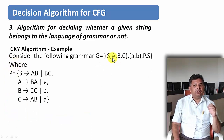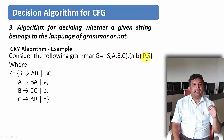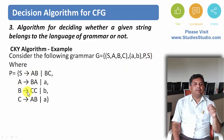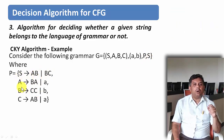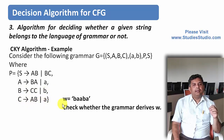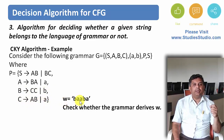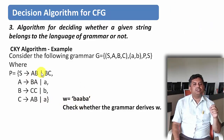Now let us take an example. We have a grammar with variables S, A, B, and C; terminal symbols a and b; production rules P; and starting symbol S. The productions are: S → AB | BC, A → AB | a, B → CC | b, and C → AB | a. We take the string W = b, a, a, b, a and check whether this string belongs to this grammar.